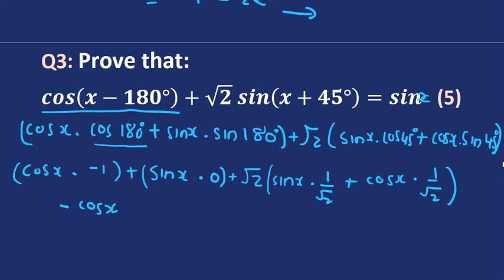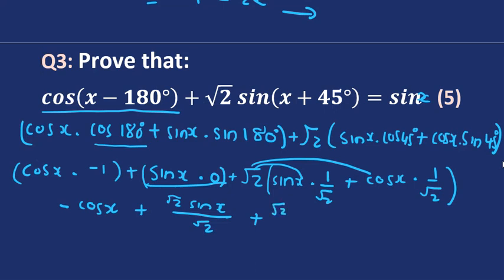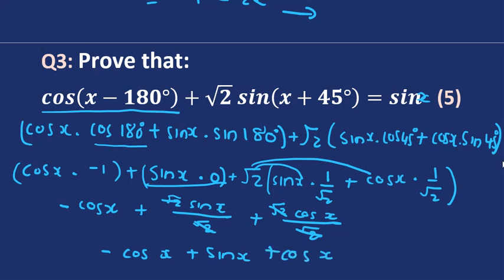Simplifying further: we have negative cosine x plus sine x over root 2 plus cosine x over root 2. Multiplying through by root 2 over root 2 to combine fractions: the root 2 sine x over root 2 gives sine x, and root 2 cosine x over root 2 gives cosine x. The negative cosine x and positive cosine x cancel, leaving just sine x. This equals our right-hand side, so we have proven that the left-hand side equals the right-hand side.